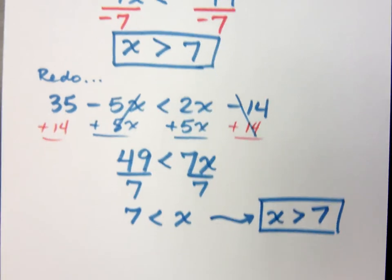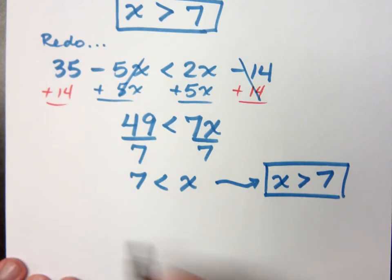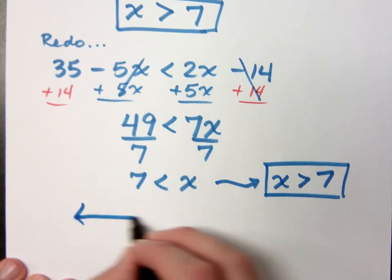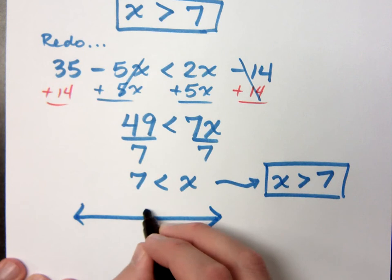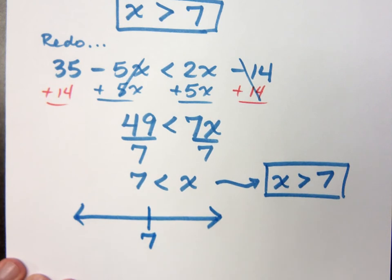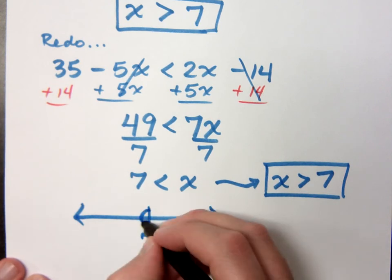But I'm not done. I want to graph this guy, and I want to express my answer using interval notation. So when I graph, here's 7. And what kind of circle will I have?